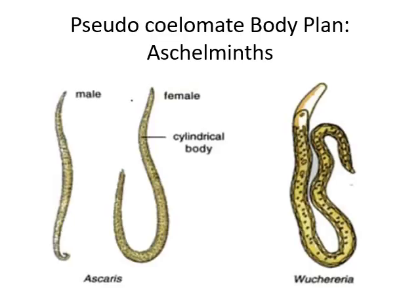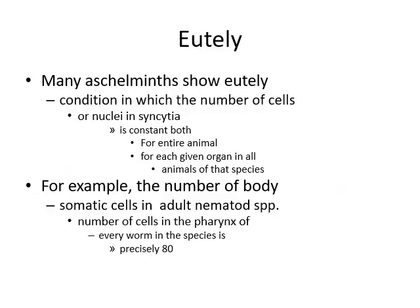Aschelminthes body plan. Aschelminthes having Ascaris — male and female. Many Aschelminthes show eutely, i.e., the condition in which the number of cells or the nuclei in cells is constant for the entire animal and for each given organism in all animals of a particular species. For example, the number of somatic cells in the adult nematode species, or the number of cells in the pharynx of every worm in the species, is precisely 80 — you cannot see 81 or 79 even.